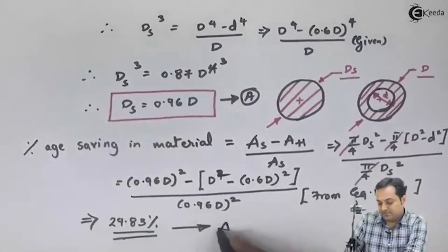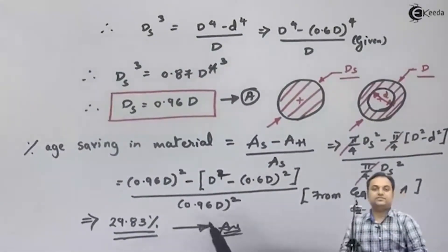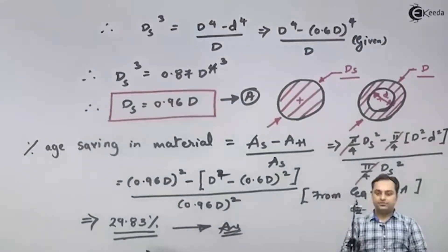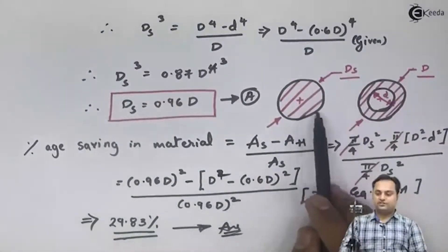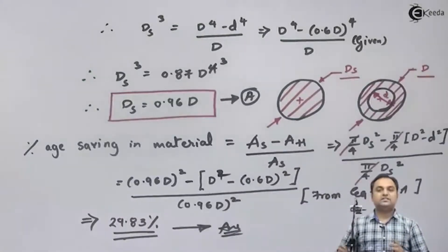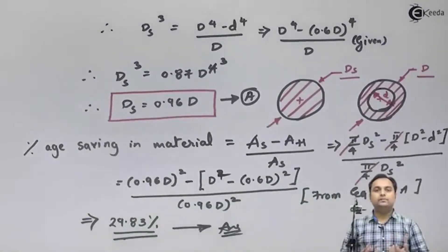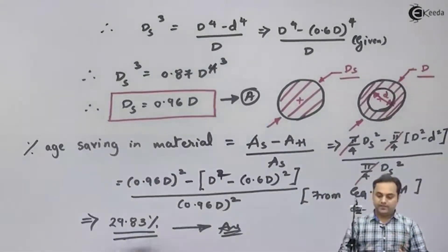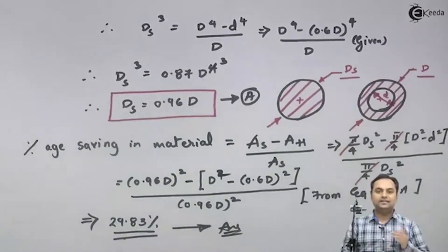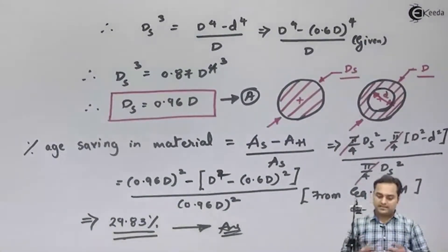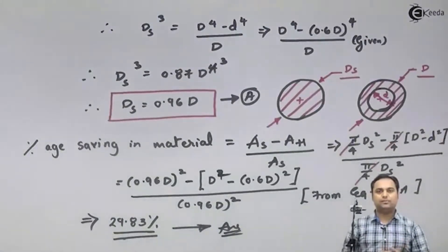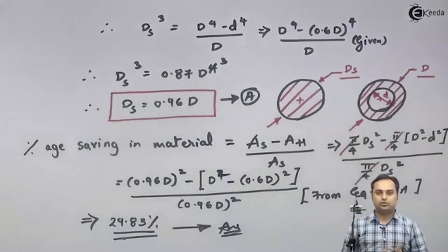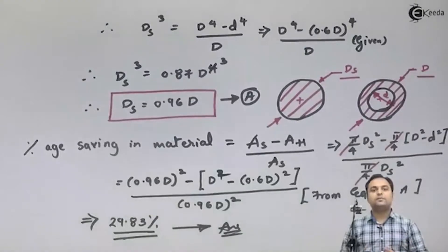This means approximately 30 percent reduction in weight. If we shift from a solid shaft to a hollow shaft with the same power, same speed, and same material, the hollow shaft will be about 30 percent less in weight compared to the solid shaft. That is why we prefer a hollow shaft over a solid shaft — it is lighter, requires less power to drive, and reduces cost. With this, we complete the question.